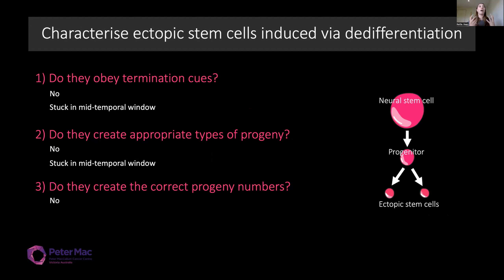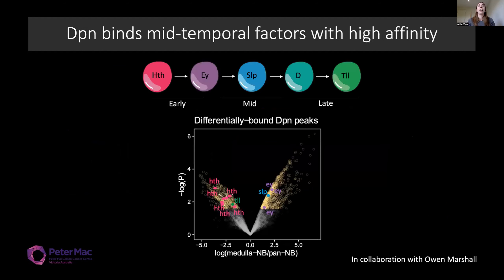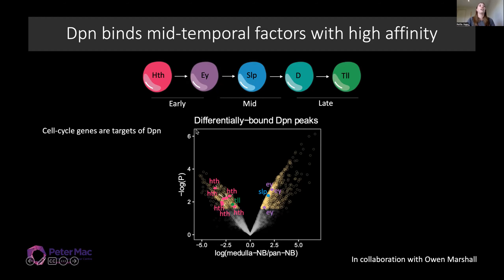Now that we understood the phenotypes of these ectopic stem cells, we wanted to delve deeper into why they possess them. We collaborated with Owen Marshall to do some DAMID to identify the targets of Deadpan — looking at Deadpan targets in medulla neurostem cells compared to those in the rest of the larval brain. We found that Deadpan bound in proximity to all temporal transcription factors, but within the medulla this was significantly reduced at homothorax and talus loci and significantly increased at eyeless and sloppy paired. This suggests mid-temporal factors are direct target genes of Deadpan, explaining the immediate induction into that temporal window. Cell cycle genes were also direct targets of Deadpan, which may explain the slower cycling.